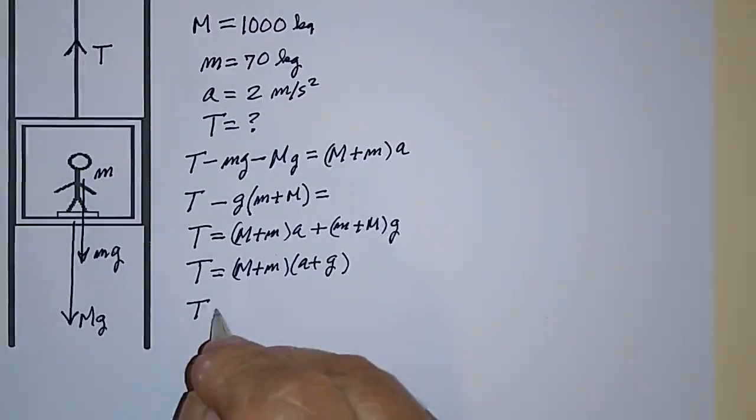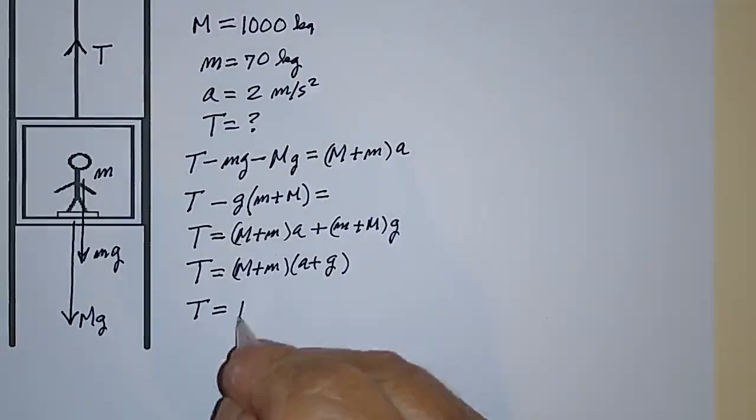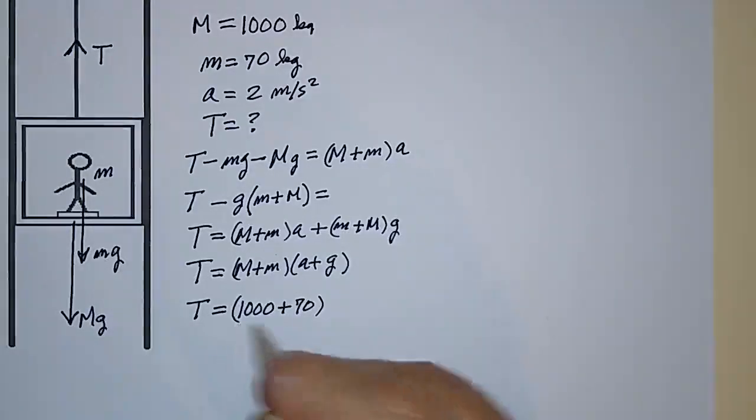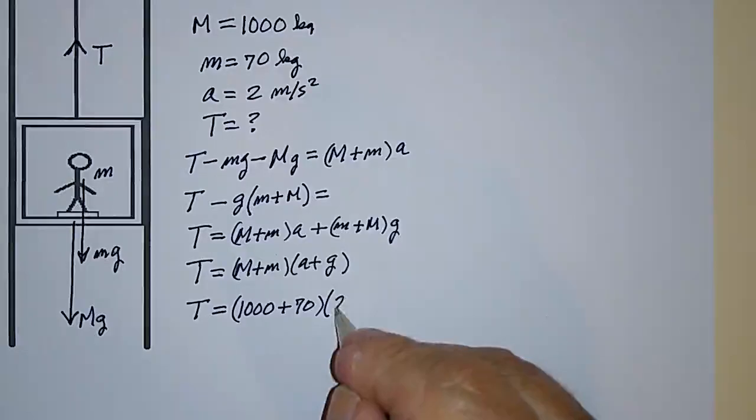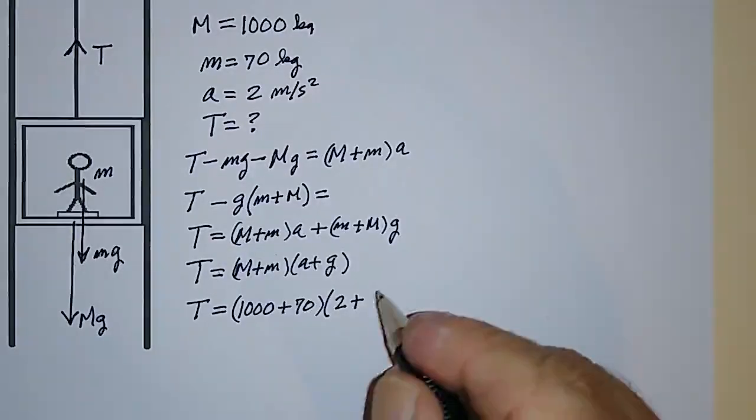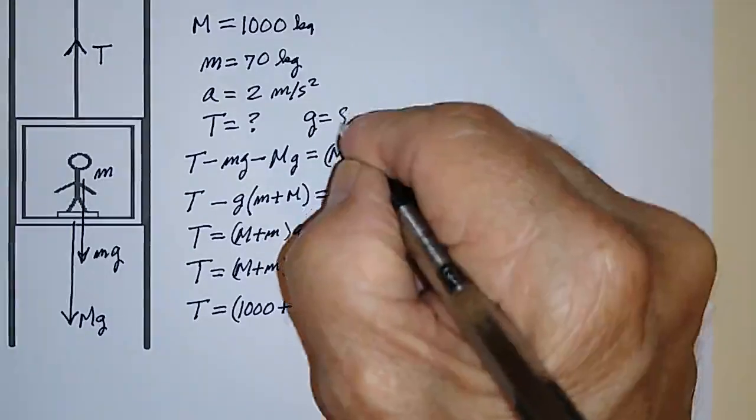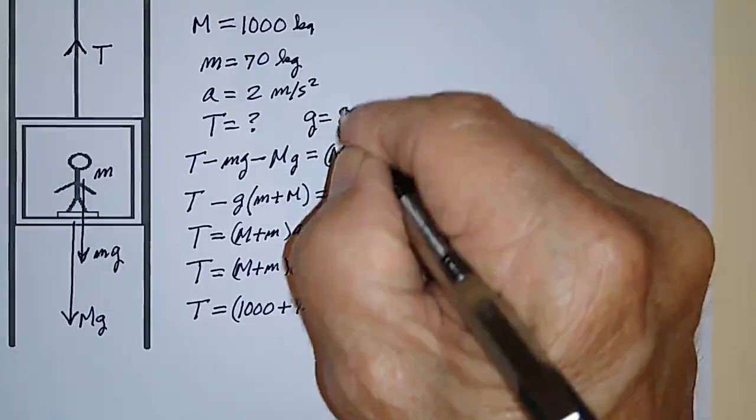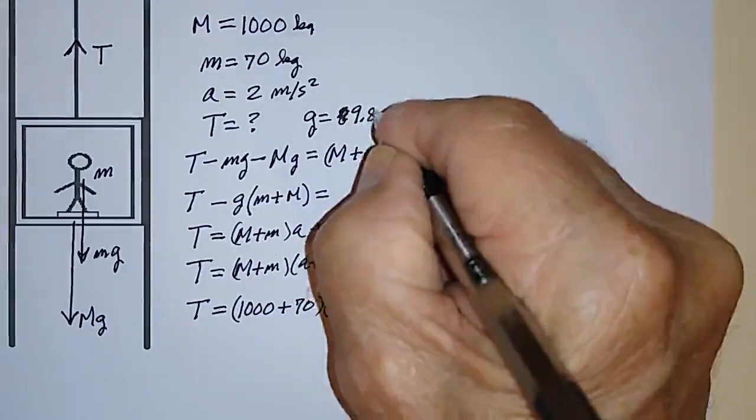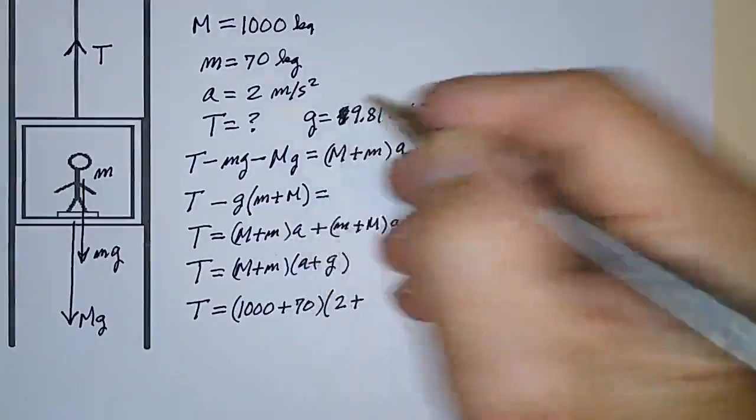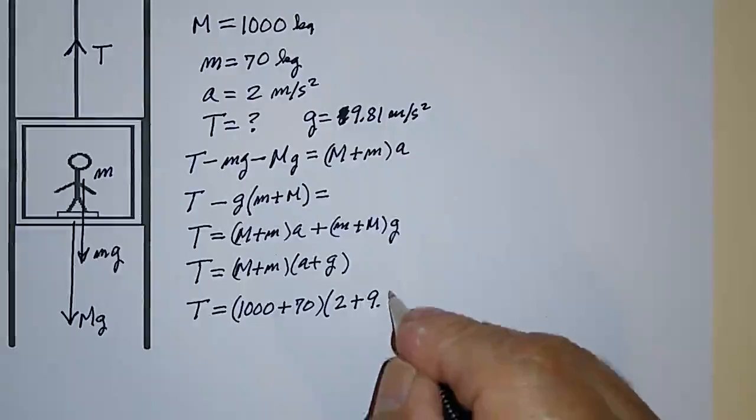If I plug the numbers in that I gave you, big M was 1,000 kilograms, little m was 70 kilograms, and A is 2 meters per second squared. G, I didn't tell you, but G is equal to 9.81 meters per second squared.